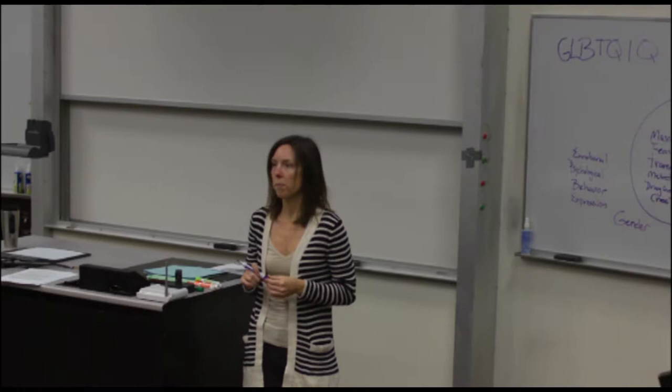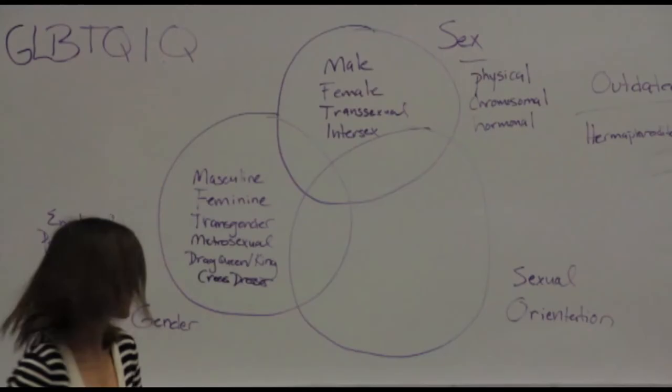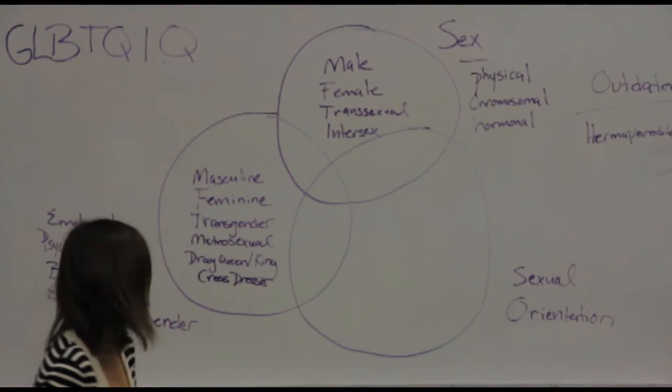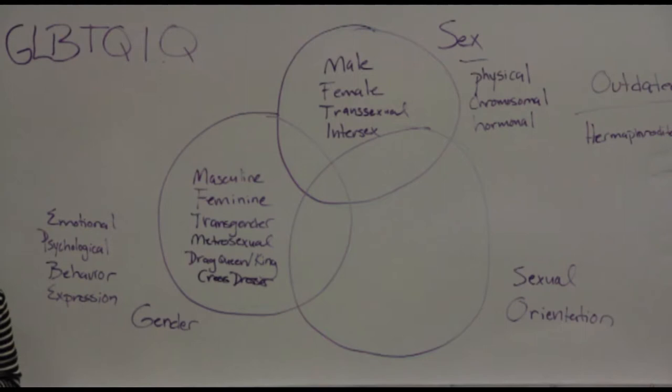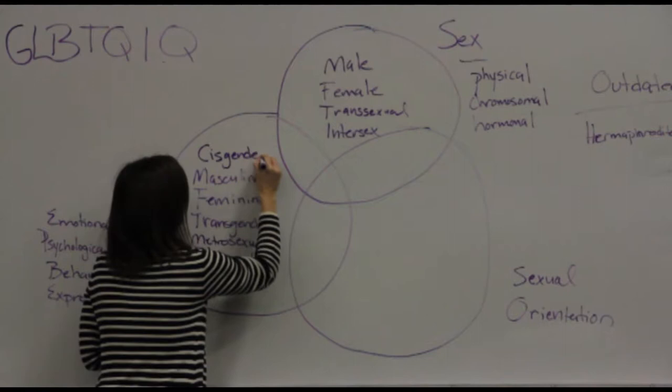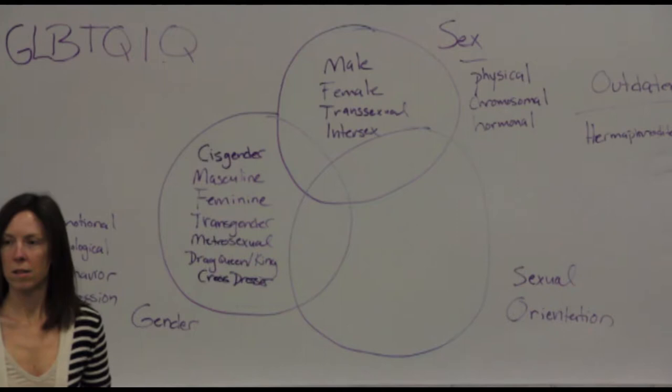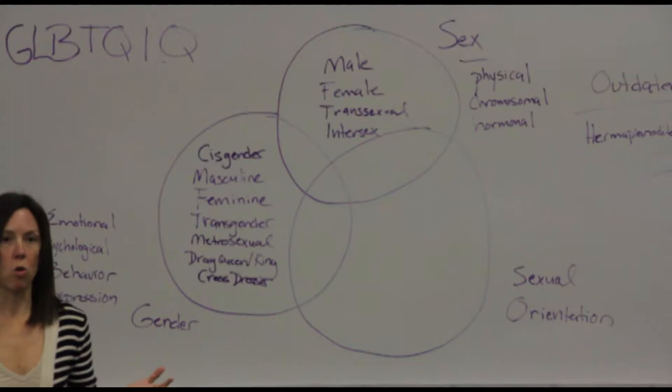One more term to add here is cisgender — C-I-S gender — which was new to me recently. That means you present in accordance with your biological sex. So a male who presents as male, a female who presents as female — it's just another way to describe that dominant majority. If you're born male and you feel male and present in a masculine way, you would be cisgender.